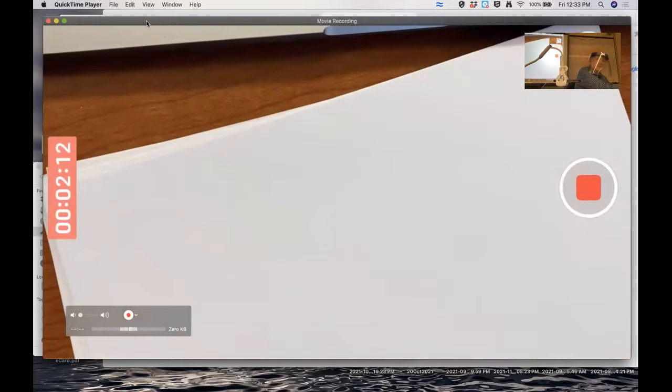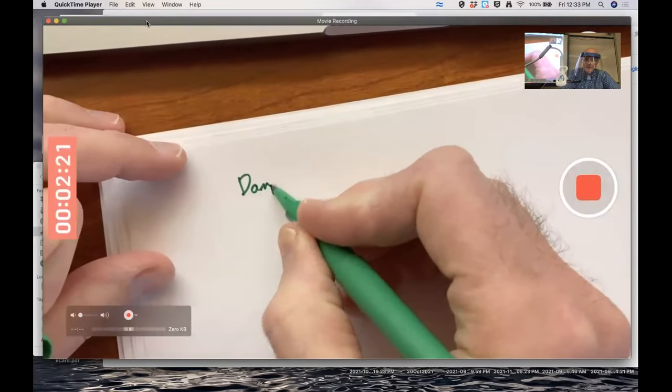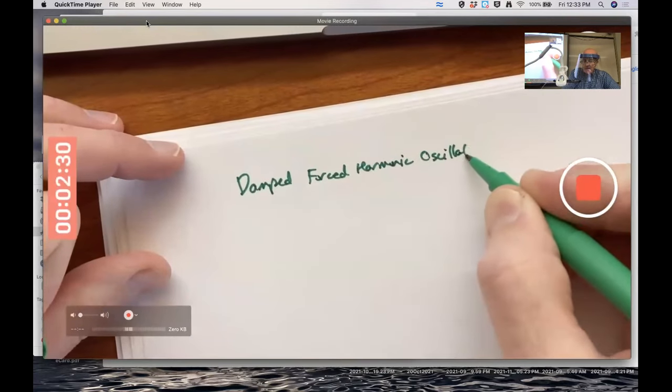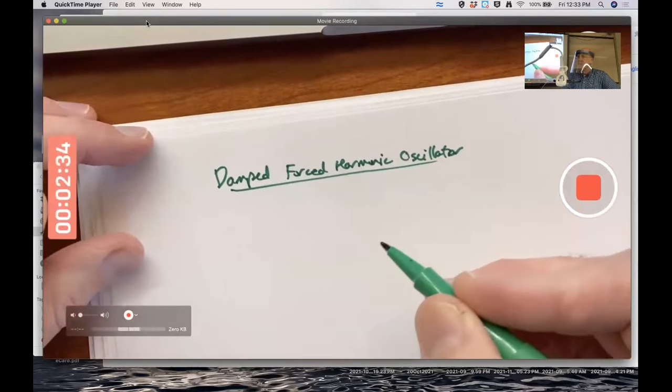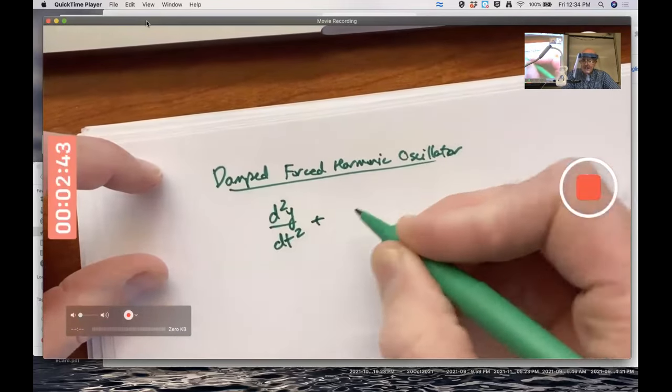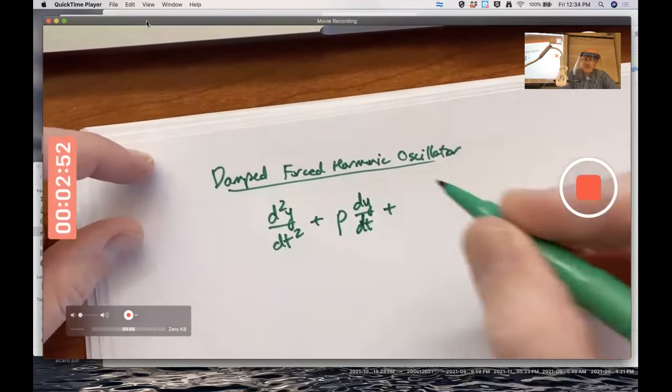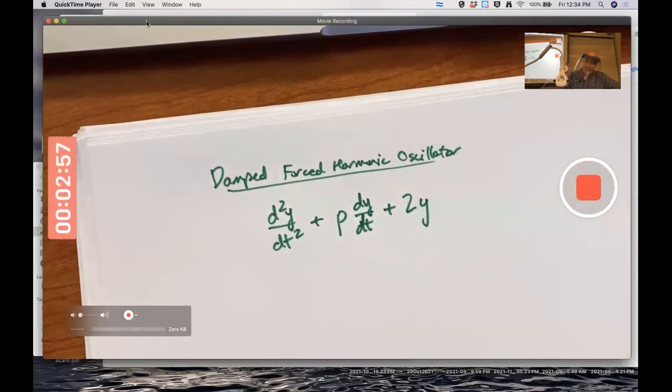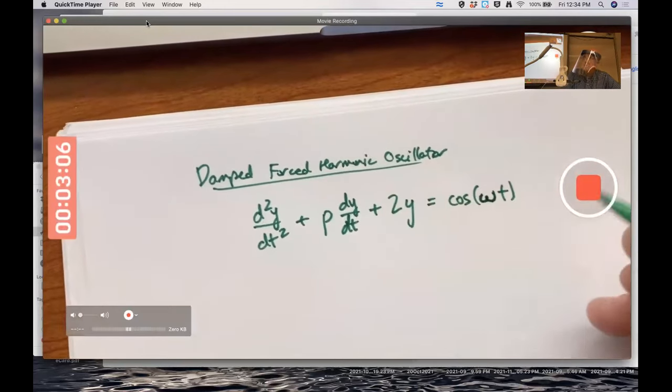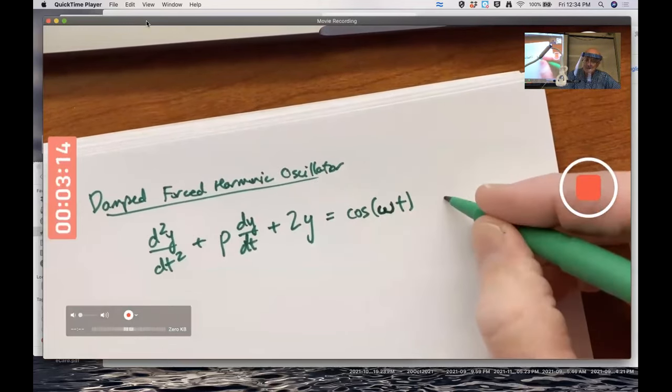So how do we understand this particular graph right here? What's the background? The background is that we are trying to analyze a damped forced harmonic oscillator with sinusoidal forcing. The second derivative of the position with respect to time is the acceleration plus the damping constant, which I'll call P, times velocity, plus we'll take the spring constant to be two, just like the book does for these graphs.